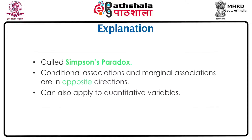This phenomenon is called Simpson's paradox. The definition of Simpson's paradox is that conditional associations and marginal associations are in opposite directions. We have seen Simpson's paradox applied to the case of three binary variables, but more generally Simpson's paradox can apply for any kind of variables and in particular to the case where we have quantitative variables. The reason why such a paradox occurs is that we have a third variable which is not of direct interest but which can affect our conclusions by being highly correlated with each of the two variables in which we are interested.